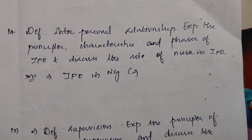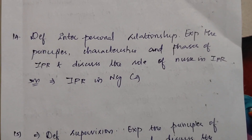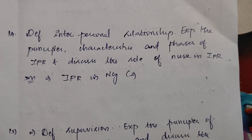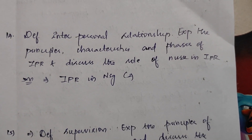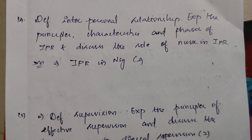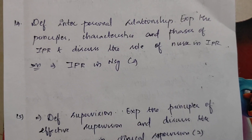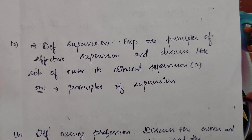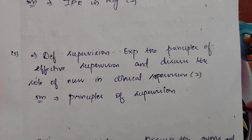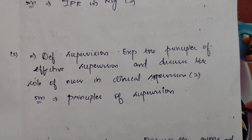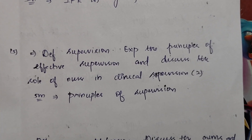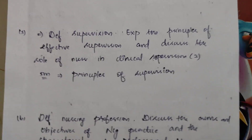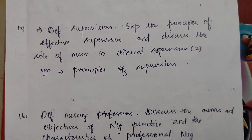Next, define interpersonal relationship. Explain the principles, characteristics and phases of interpersonal relationship and discuss the role of the nurse in IPR. Next, define nursing profession and explain the principles of effective supervision and discuss the role of the nurse in clinical supervision — two times in 15 marks. In 5 marks, principles of supervision.